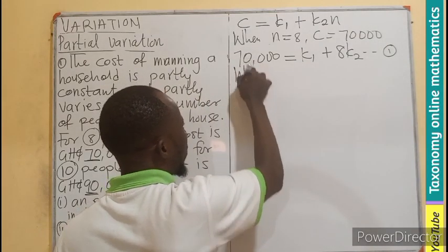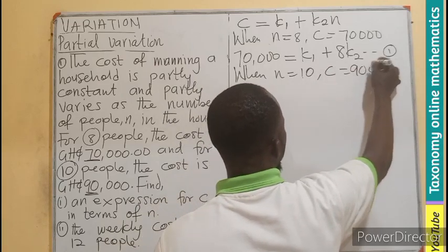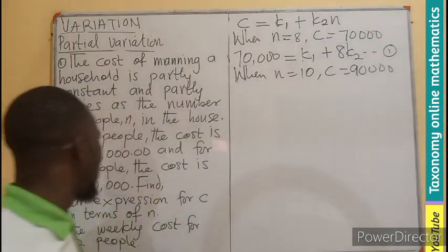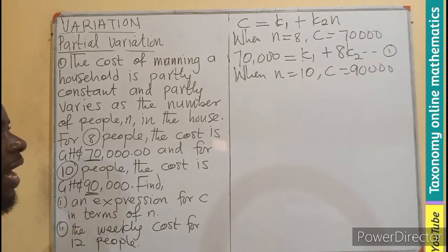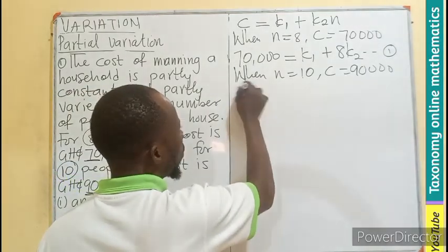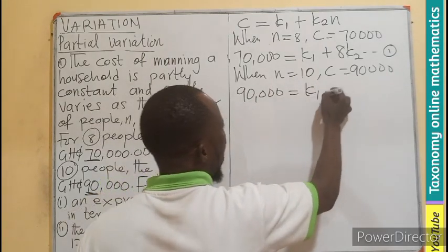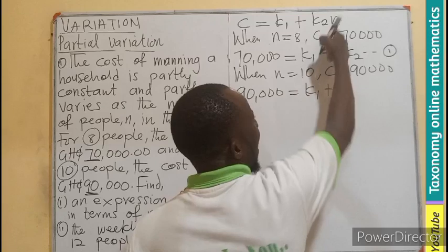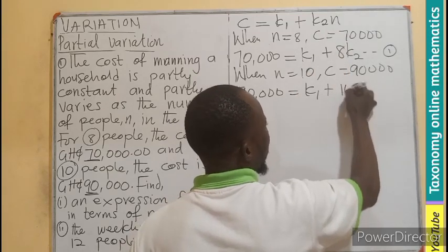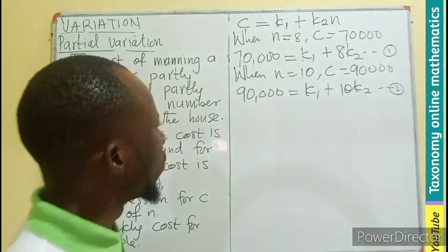For the second equation, when n equals 10, C is 90,000. So we do our substitution: 90,000 equals k1 plus 10k2. This becomes equation two.